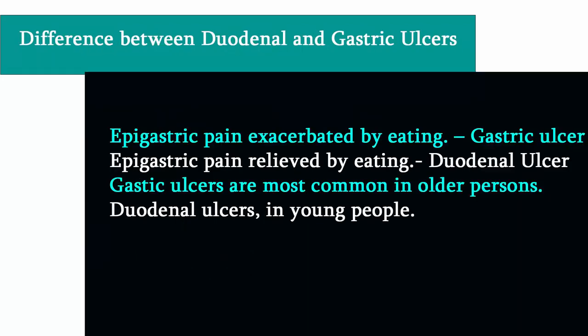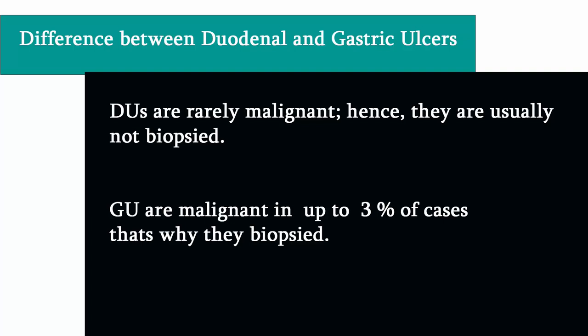Differences between duodenal ulcer and gastric ulcer: epigastric pain exacerbated by eating suggests gastric ulcer, while epigastric pain relieved by eating suggests duodenal ulcer. Gastric ulcers are most common in older persons, while duodenal ulcers are common in young people. Upper GI barium study identifies 70–80% of peptic ulcer disease. Duodenal ulcers are rarely malignant and hence are usually not biopsied.